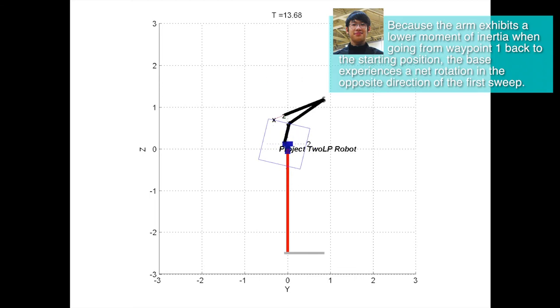Because the arm exhibits a lower moment of inertia when going from waypoint 1 back to the starting position, the base experiences a net rotation in the opposite direction of the first sweep.